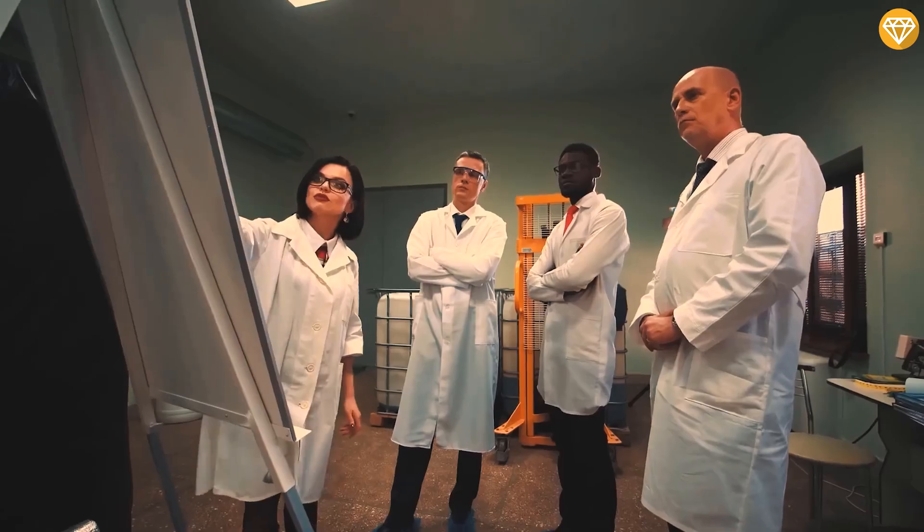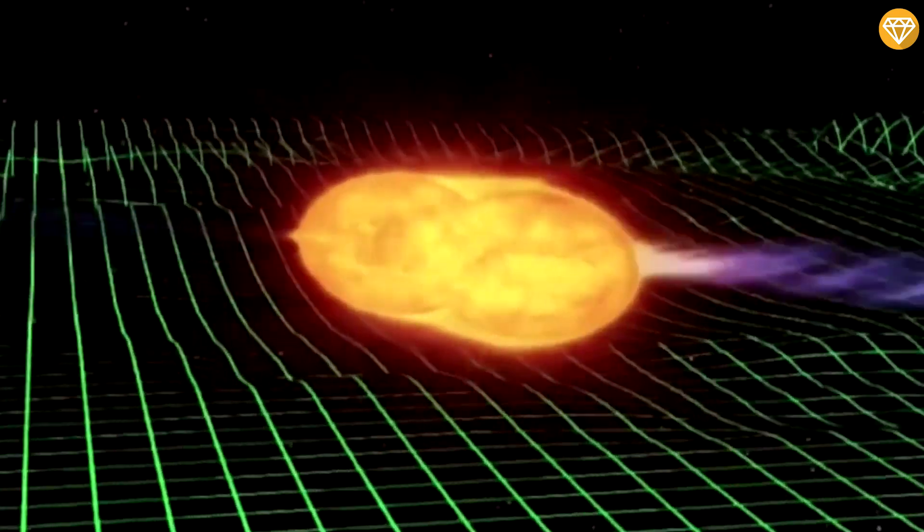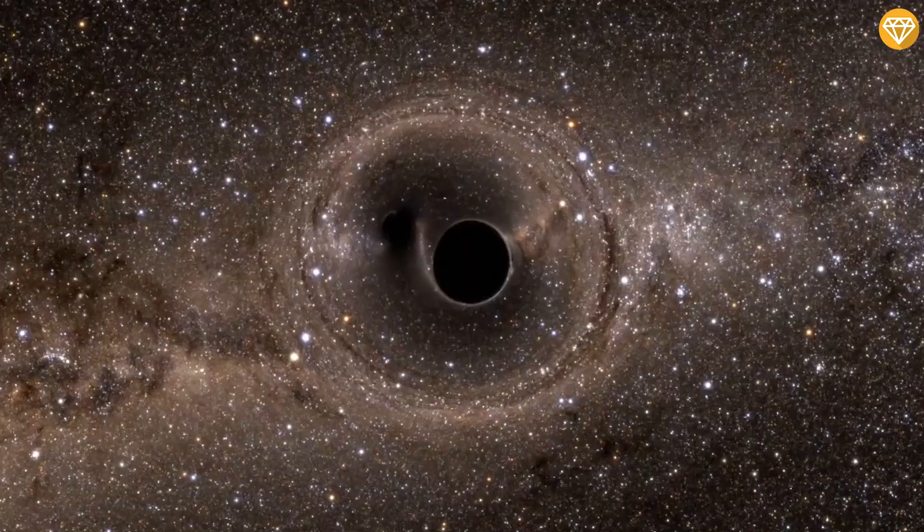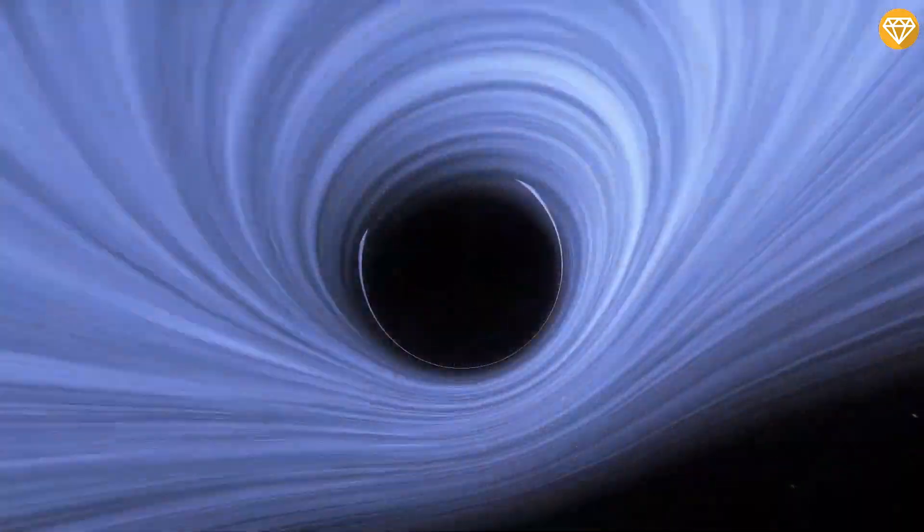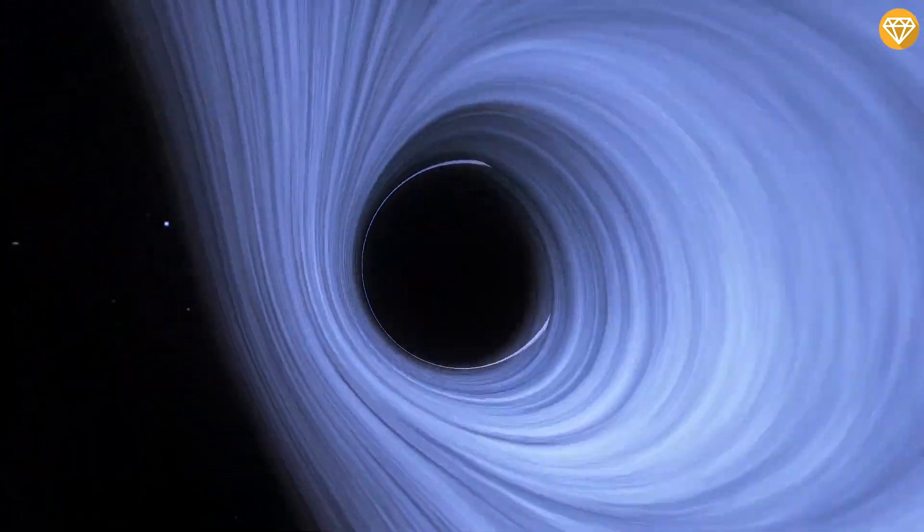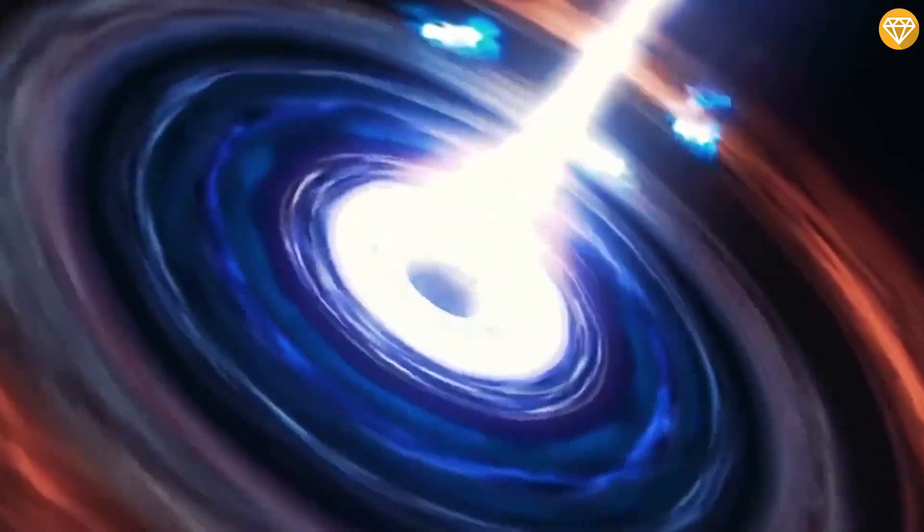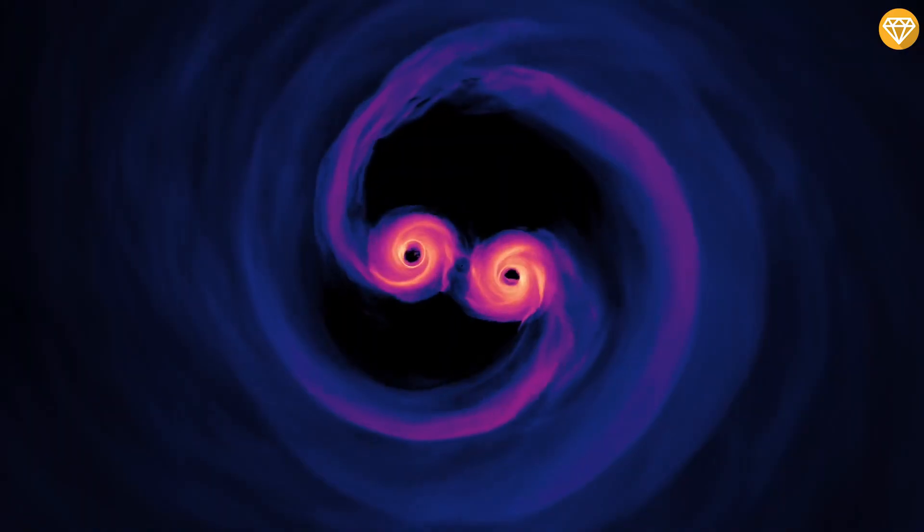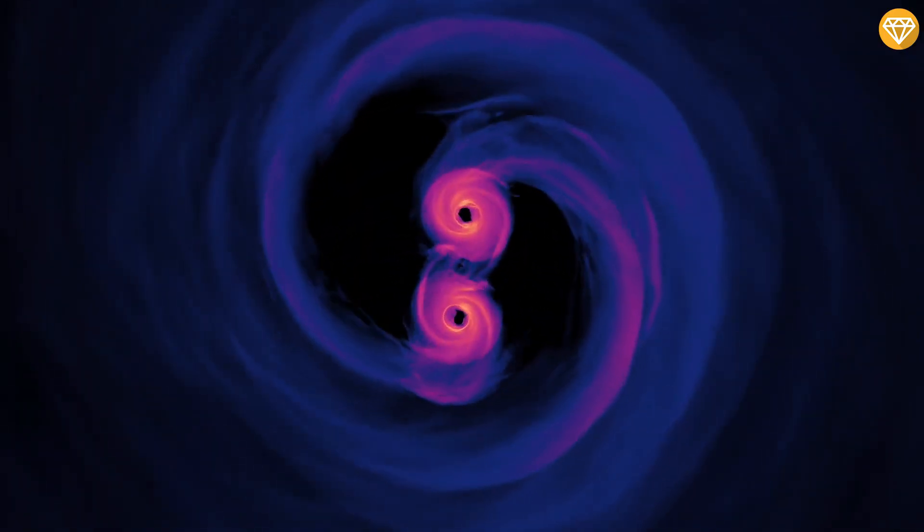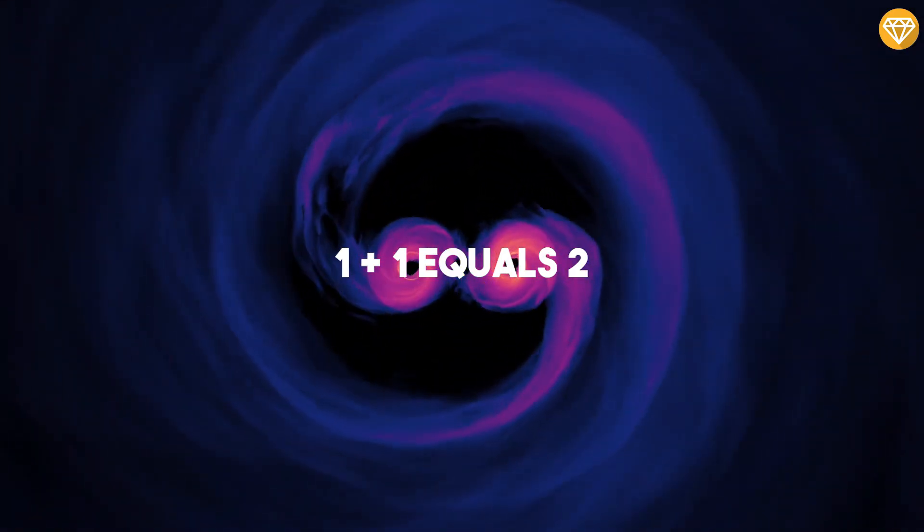After 50 years of being proposed, researchers in 2021 finally proved Hawking's theory by analyzing the gravitational waves produced by black holes. Scientists calculated the surface area of the two black holes before and after they merged and discovered that the area was greater than the sum of the two separate black holes. It seems obvious that adding 1 plus 1 equals 2, but it's a breakthrough discovery in understanding astrophysics.